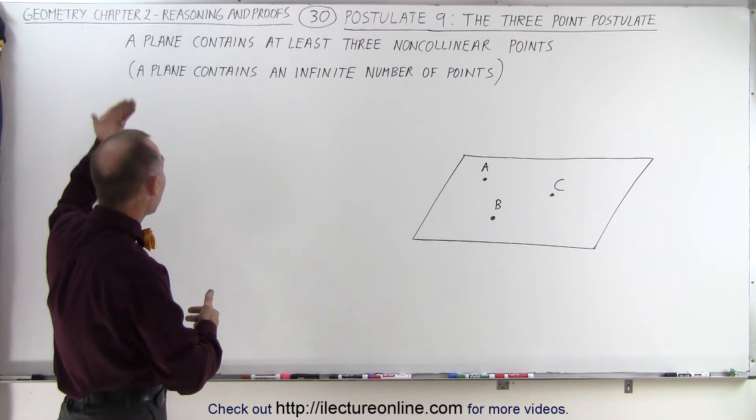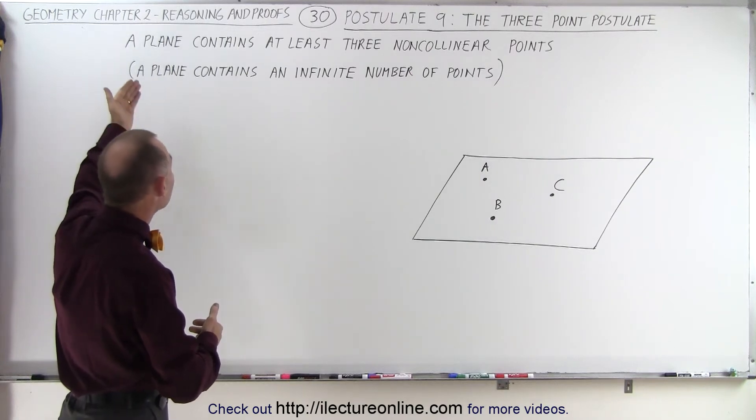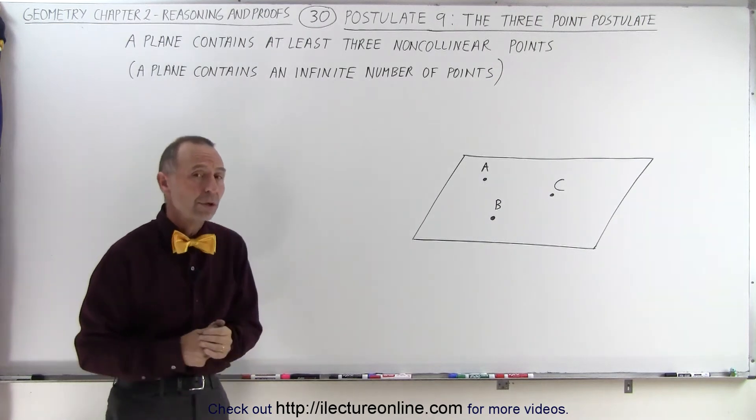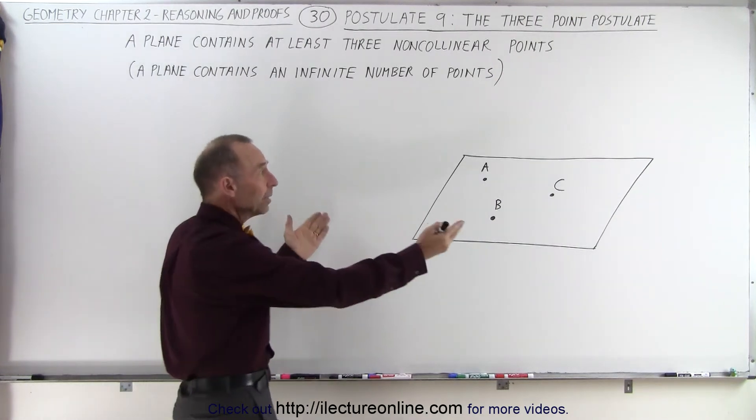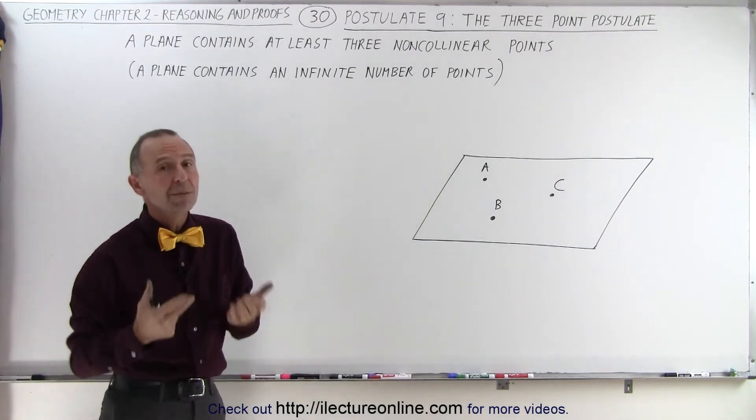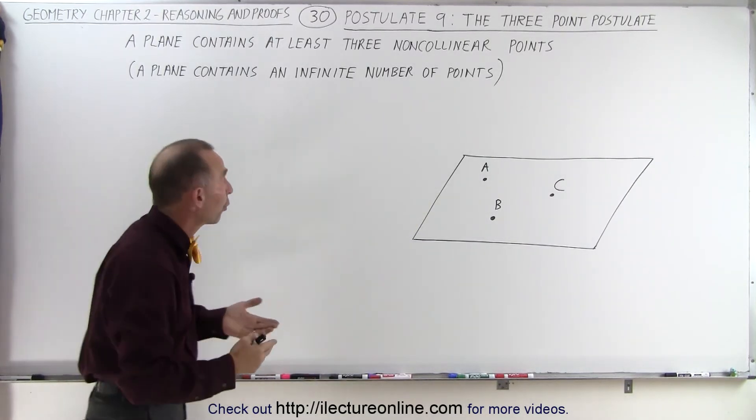In reverse, if we have a plane, then we can say that a plane contains at least three non-collinear points. So if you have any random plane, you can place three points on there that are not collinear as a minimum. But in actuality, of course,